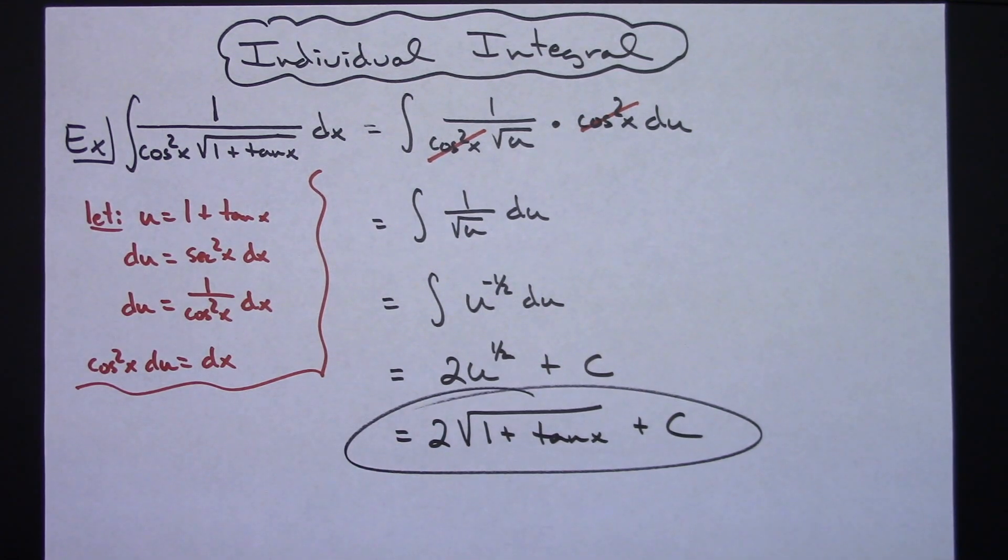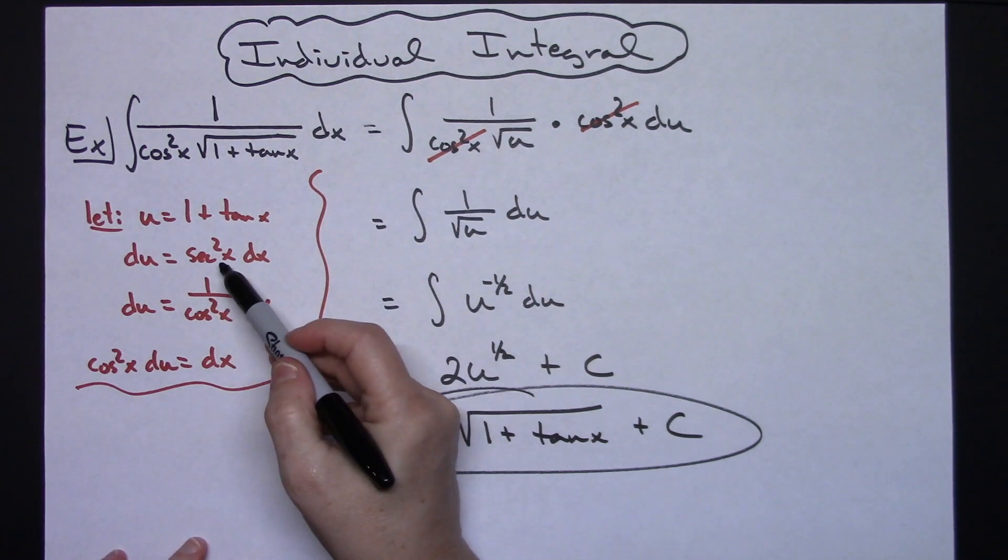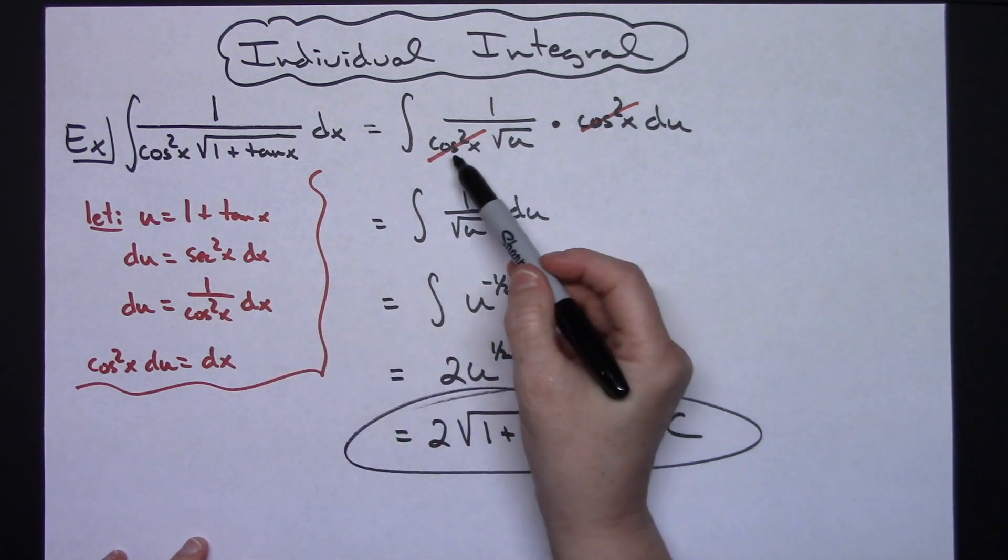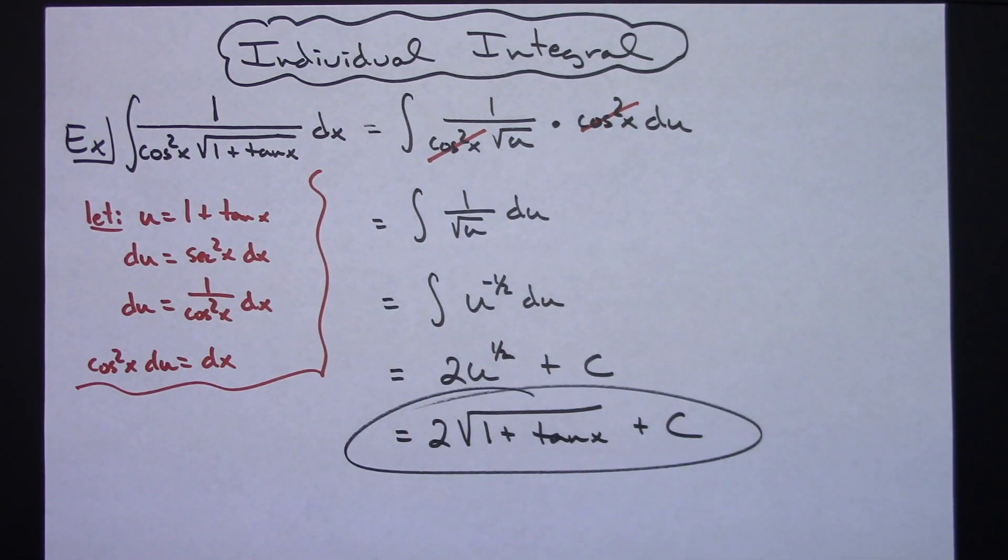So straightforward u substitution. The only thing that's a little tricky is recognizing that that secant squared x right there you need to do that reciprocal identity in order to then allow those cosine squared x's to cross out.